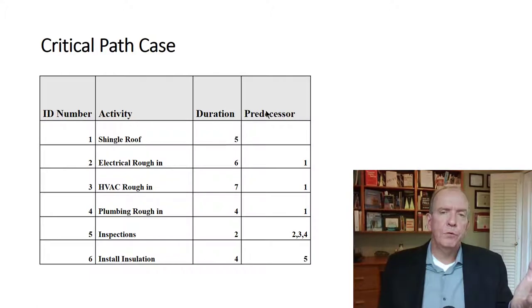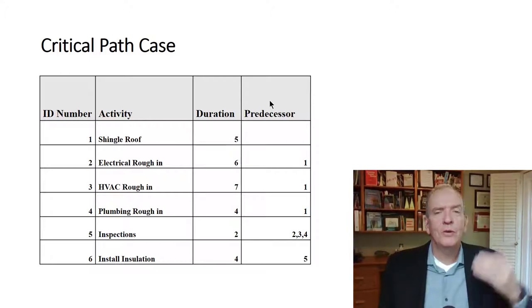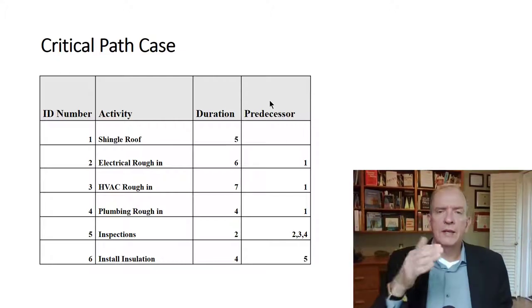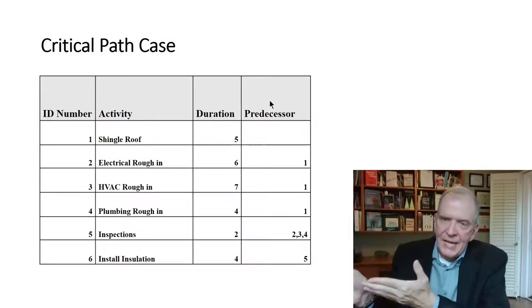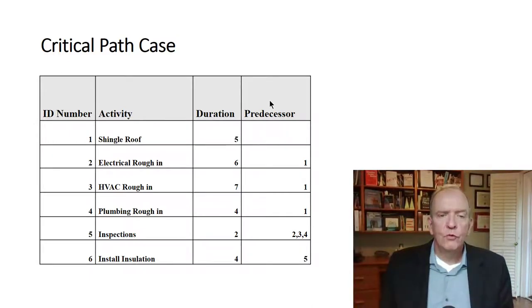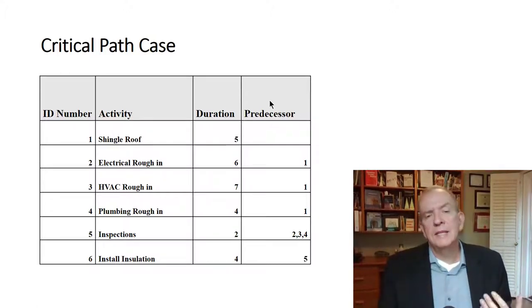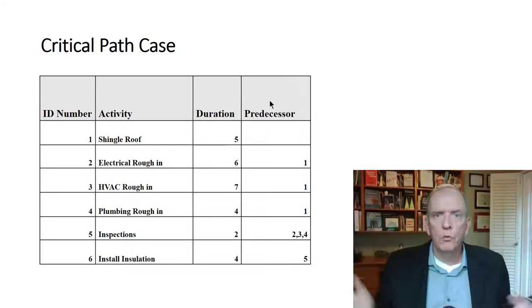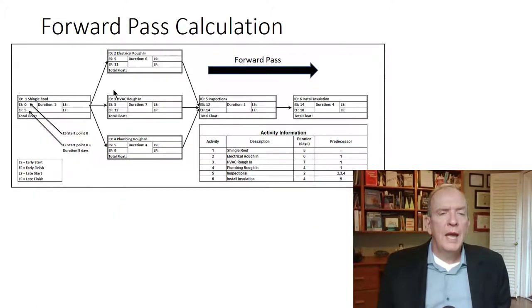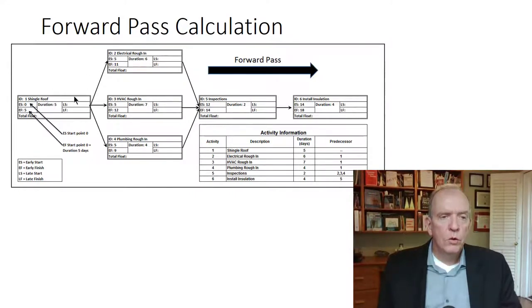The predecessor is what must happen before something else happens. In scheduling software, if you have all the predecessors laid out, you'd also have the successors. Predecessor means looking back; successor means what's coming next. So if I have shingle roof, the successors would be electrical rough-in, HVAC rough-in, and plumbing rough-in. The actual network we've been talking about consists of these nodes or boxes — called an Activity on Node network, which is how most scheduling software works today. There used to be Activity on Arrow networks, but this format is much easier for software.